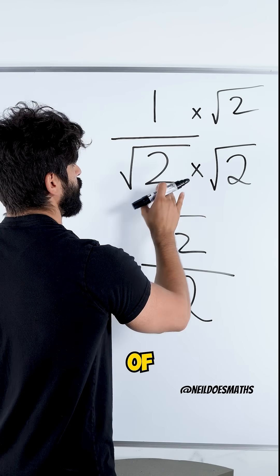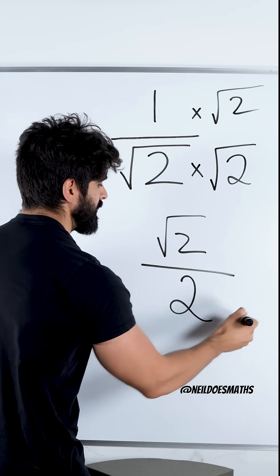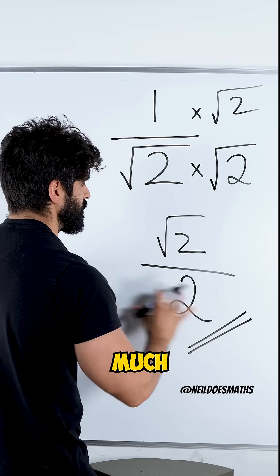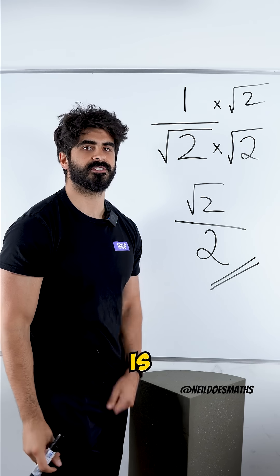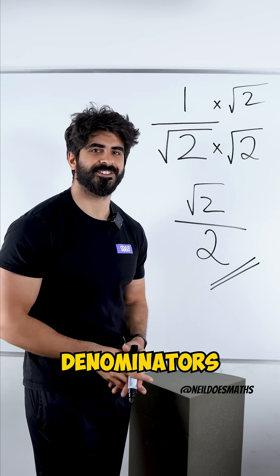And you can think of this as root of two times two, which is root of four, which is two. And this is rationalized. This is much easier to work with, dividing irrational numbers by integers. And this is the simple process of rationalizing denominators.